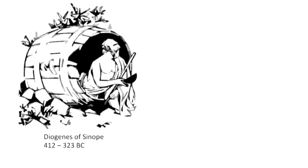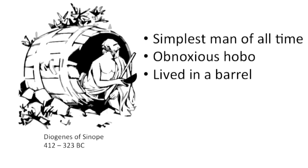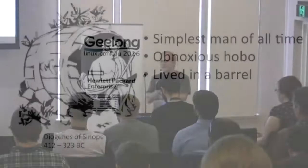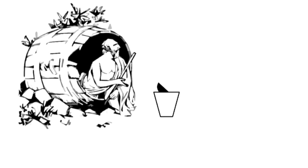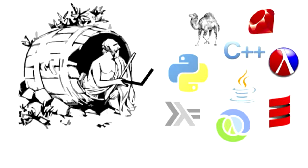Diogenes of Sinope was an ancient Greek philosopher and he's famous for being the simplest man of all time. He lived in a barrel, he didn't have any possessions except for a single bowl to drink water out of, and he doled out unwanted philosophical advice to passers-by. Famously, once he saw someone drinking water out of their cupped hands and then he realized he didn't need the bowl anymore.